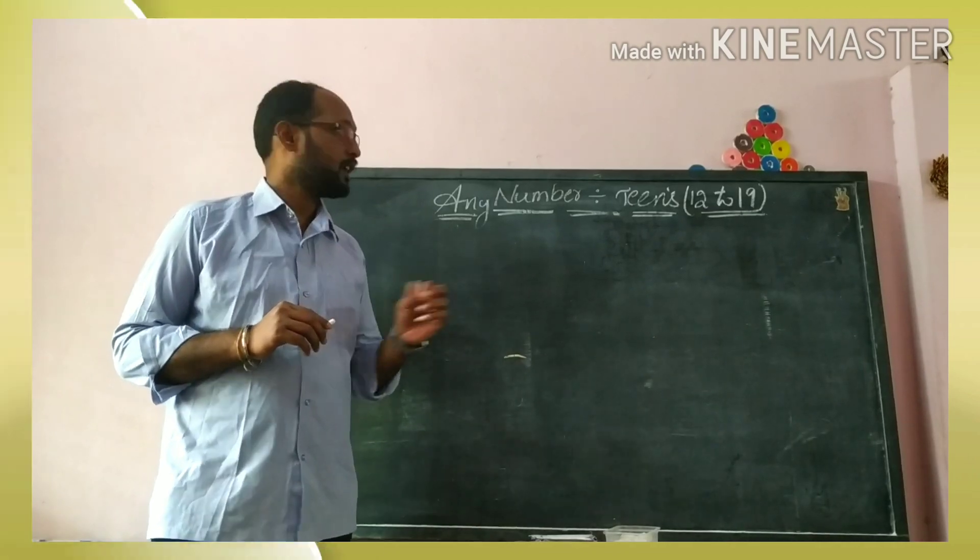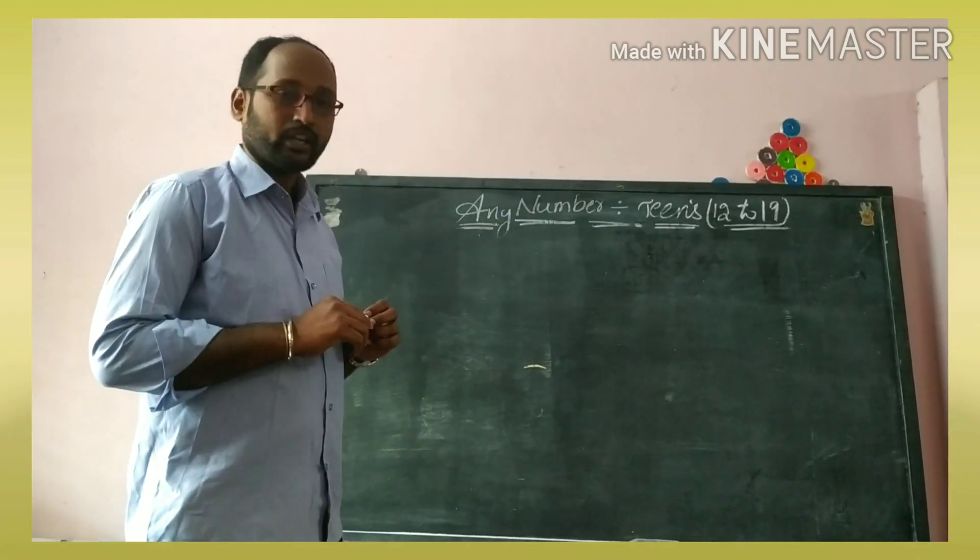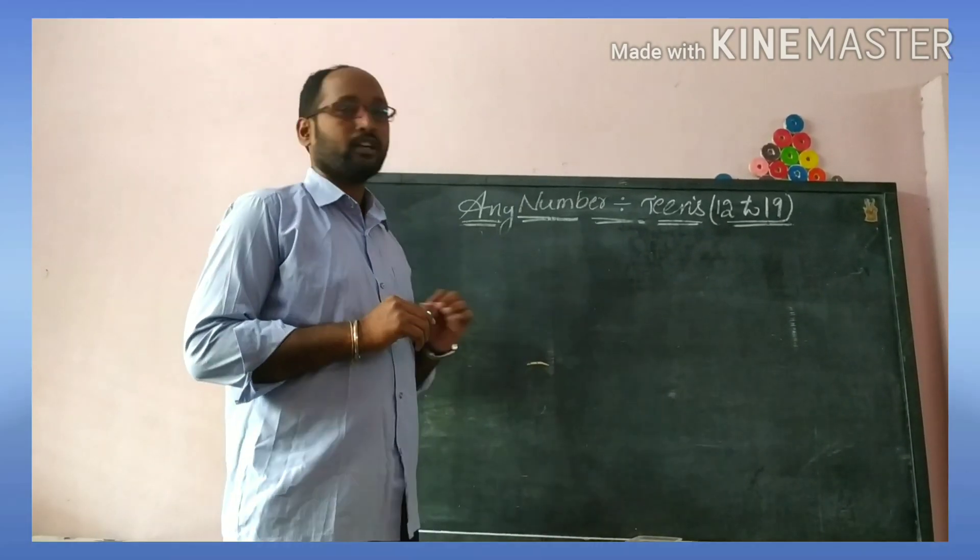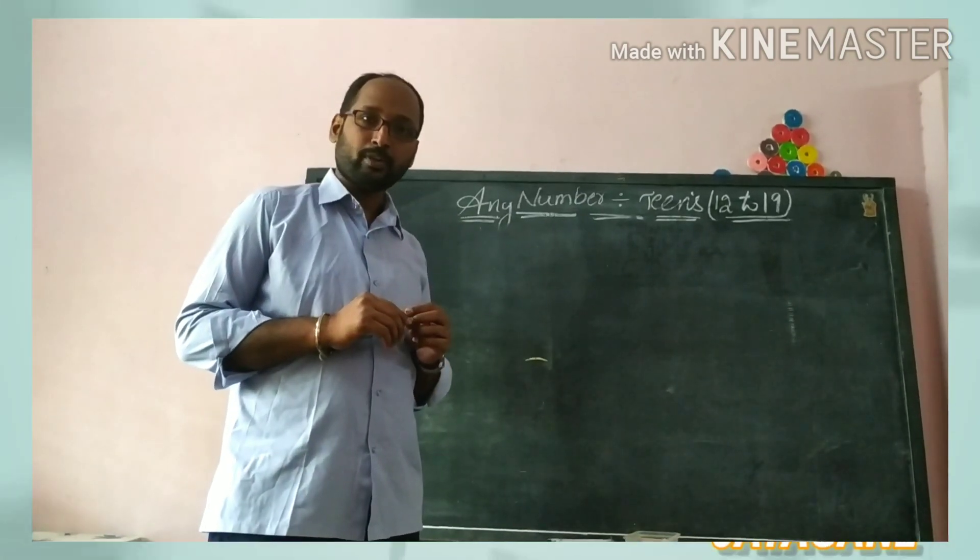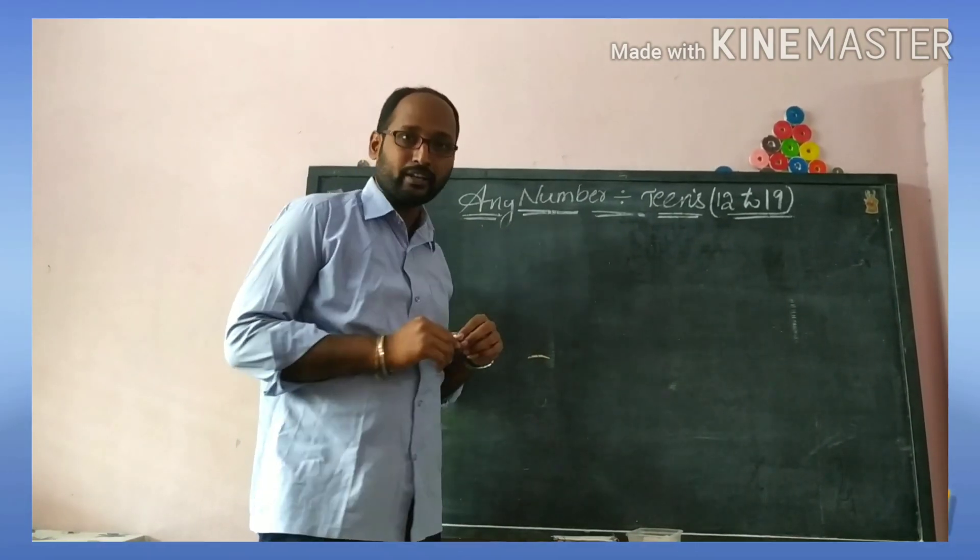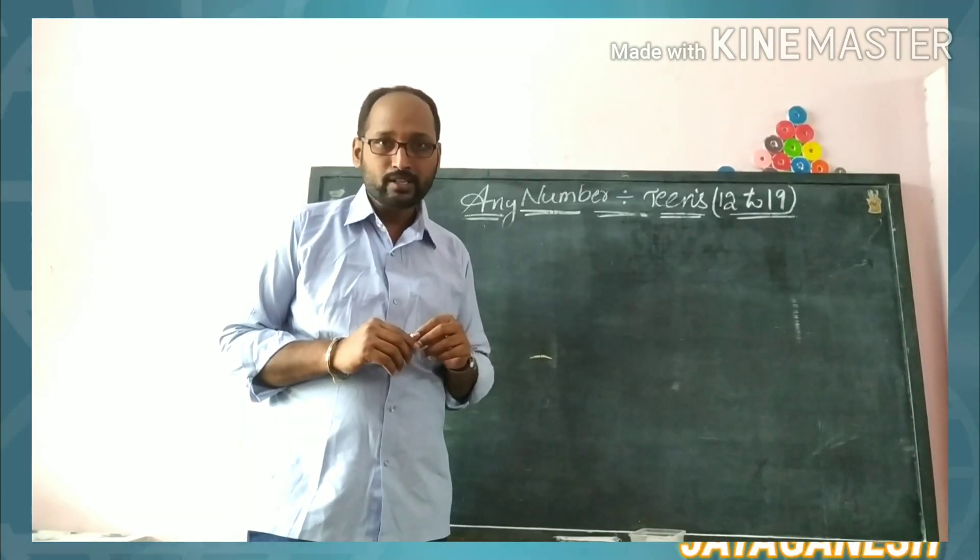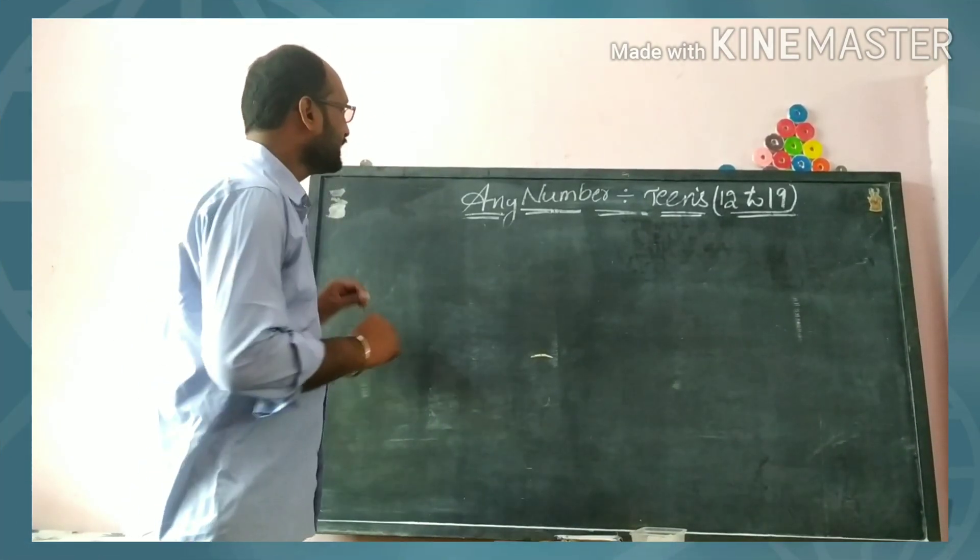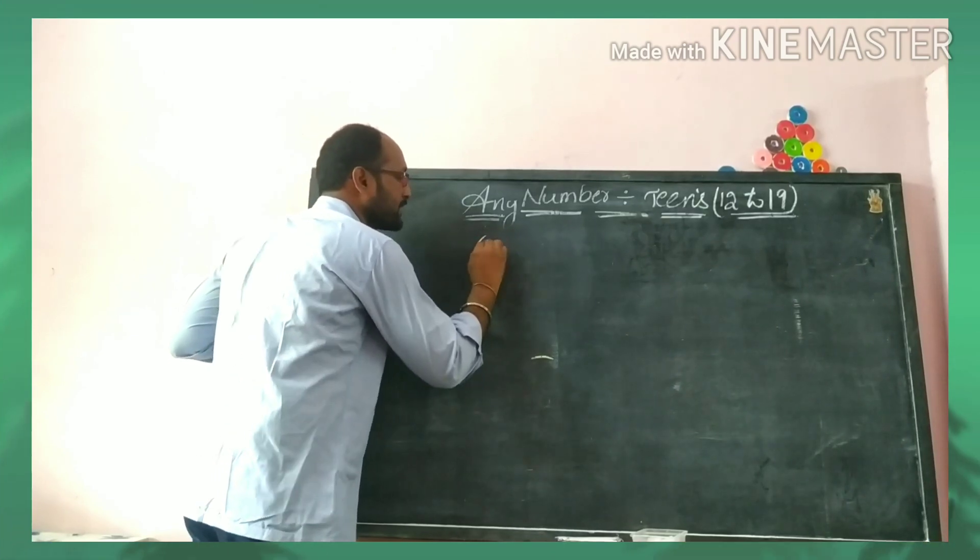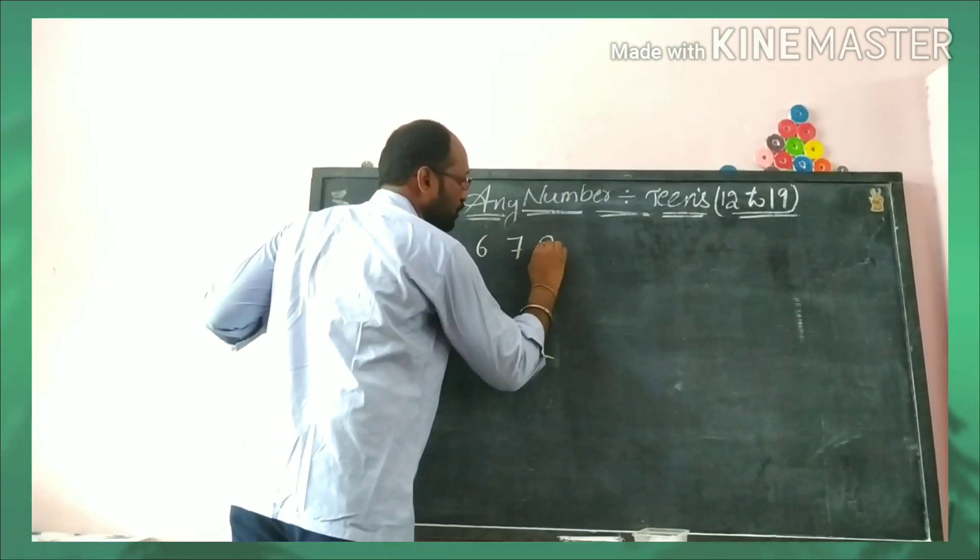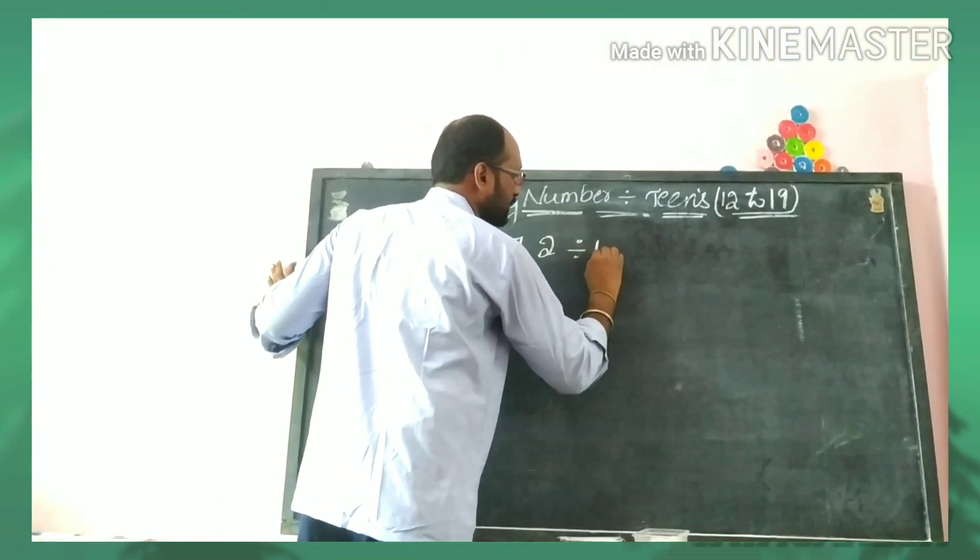Good morning children, this is the last video on this topic. This is the fourth video in advance, and I'm going to explain one more example. The question is 672 divided by 18, this is the last example I am explaining. Try to understand very clearly.